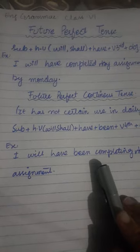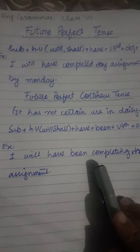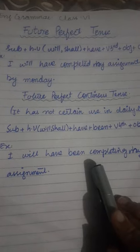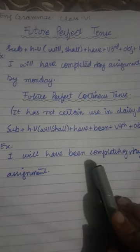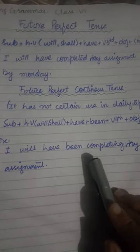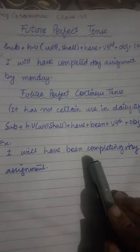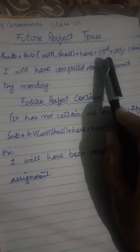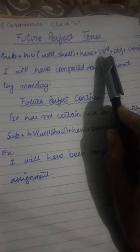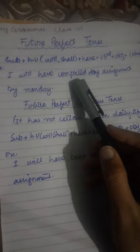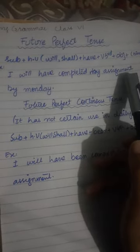In that promise, we will mention some time as well — we give the proper, accurate time that the action will be performed. So the structure will be: Subject + helping verb 'will' or 'shall' + 'have' + verb third form (past participle) + object, and at last you have to give the time as well.